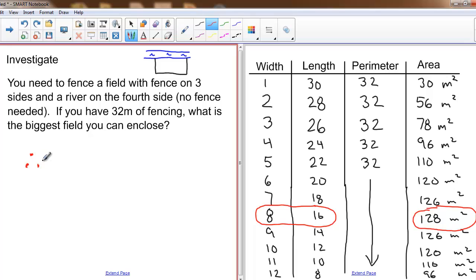Let's finish this question first. The biggest field we can enclose is 128 meters squared, and that's the biggest field. And this happens when the dimensions are 8 by 16. And you all should have noticed that here for this optimized field, the length is double the width.